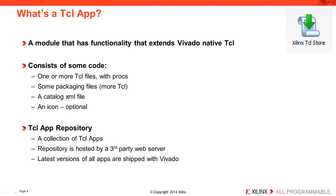An app consists of one or more Tcl files in which procs are defined. In addition, there are some infrastructure files that need to be packaged and installed — done with a couple of other Tcl files. There is a catalog file implemented in XML that provides some information for Vivado to display to the user. And finally, there can be a graphical icon delivered with an app. To a user, this is not a terribly important feature unless you eventually wish to consider contributing code.